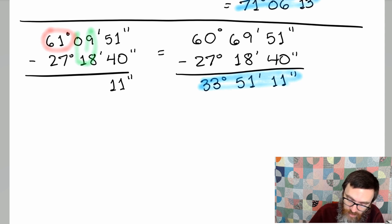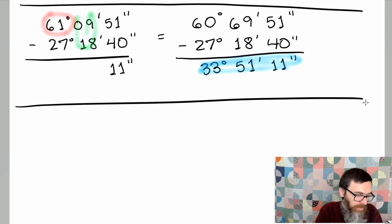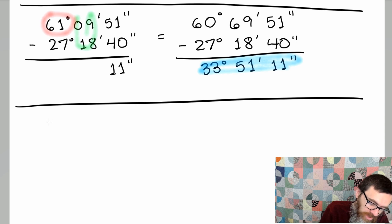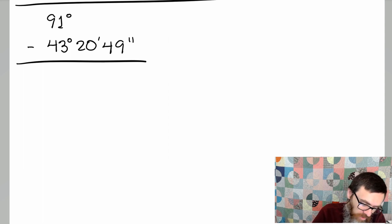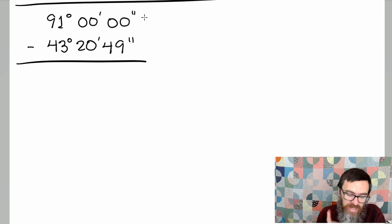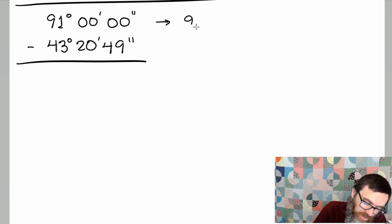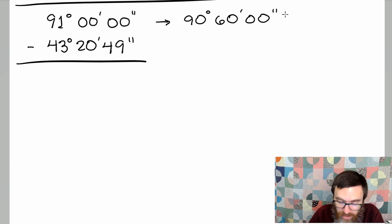Let's look at problem number four. This one might be a bit uglier. This one says 91 degrees minus 43 degrees, 20 minutes and 49 seconds. Right away, we can see that this is not going to be a nice problem because we don't have any minutes, we don't have any seconds to take away from. So we need to do something very similar to what we had up above.